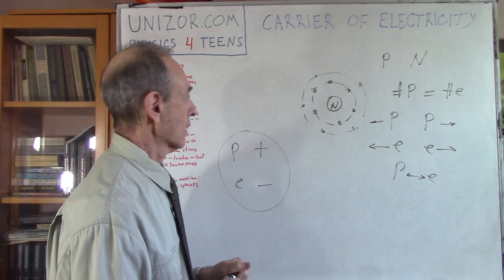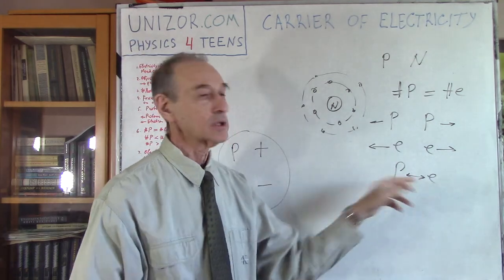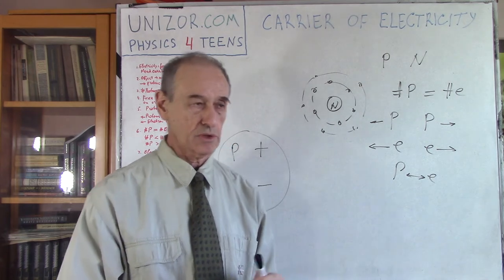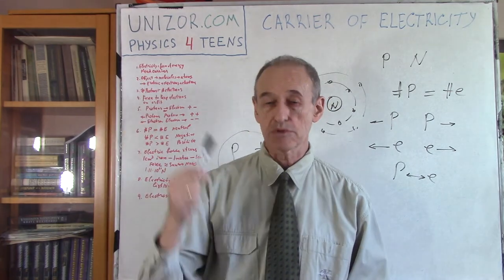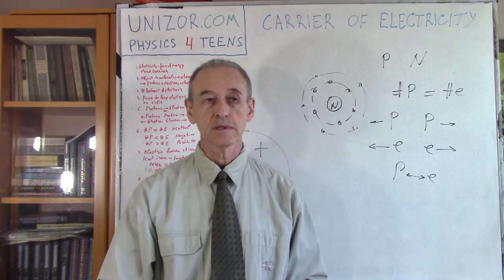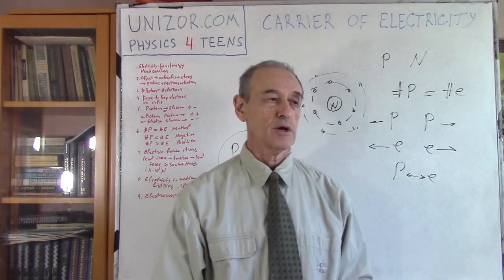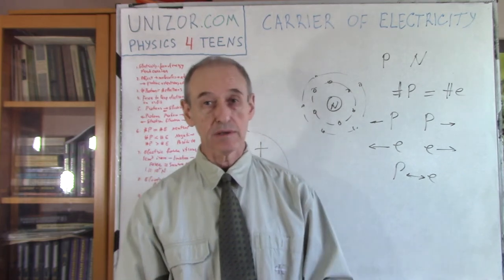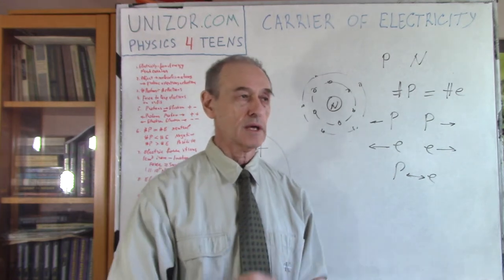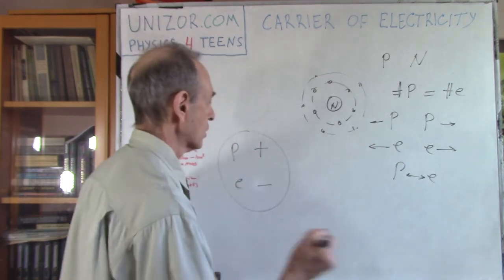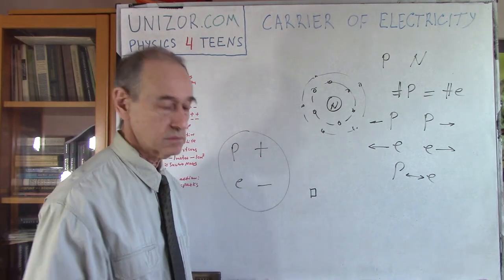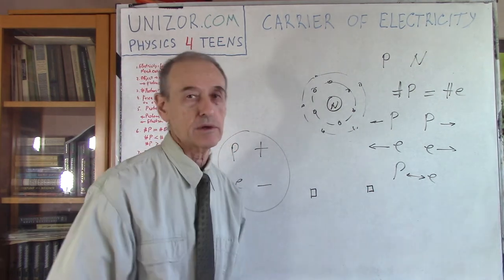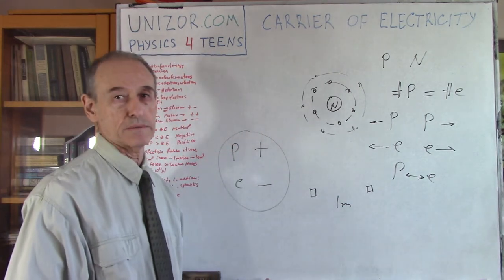The electric force between a proton and an electron is really very, very strong. I did some calculations which are presented in the notes for this lecture on Unizor.com. I wanted to demonstrate how strong electrical forces are compared to, say, gravitational forces. I took one cubic centimeter of iron, and another cubic centimeter of iron, placed them at a distance of one meter from each other.